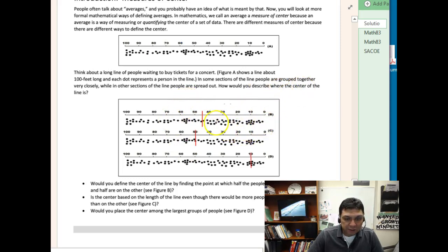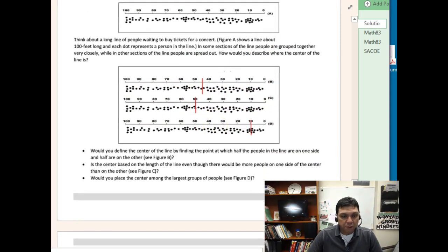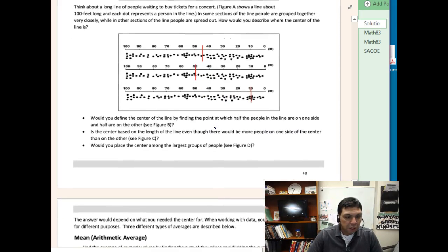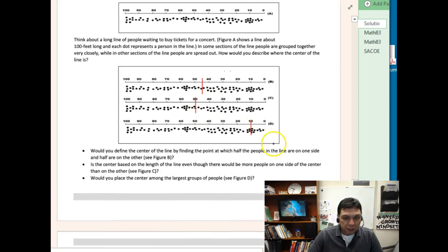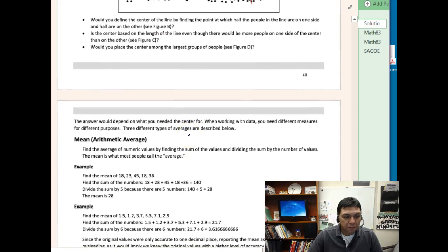You can see how they're scattered around, and looking at these people, how would you describe where the center of the line is? All these people are scattered around, and this idea of trying to find the middle is what we would do with a whole bunch of numbers if we had a set of numbers.